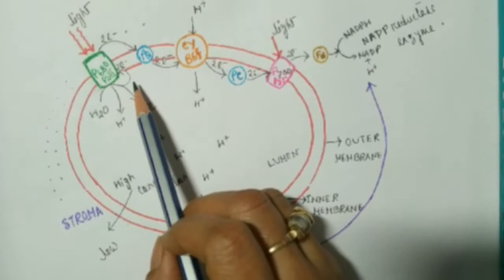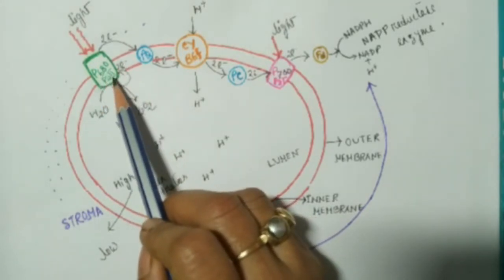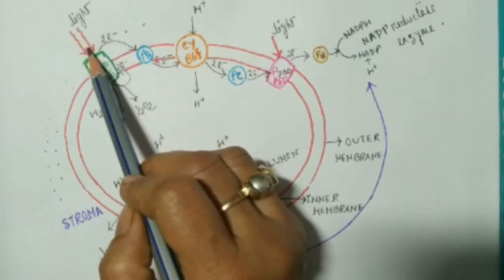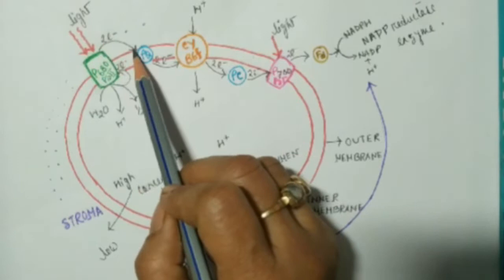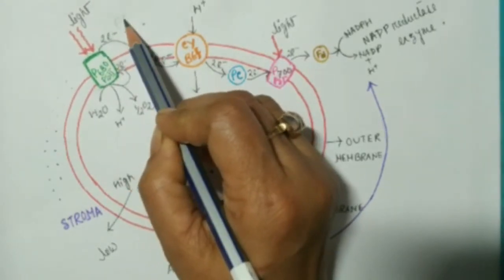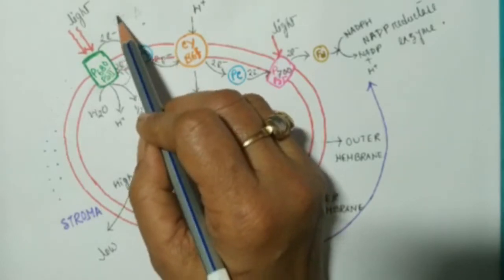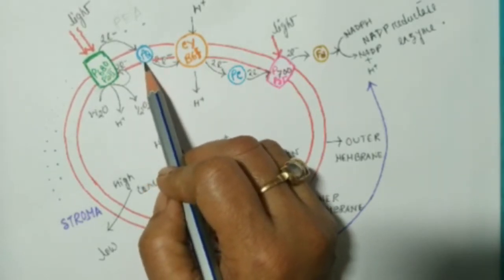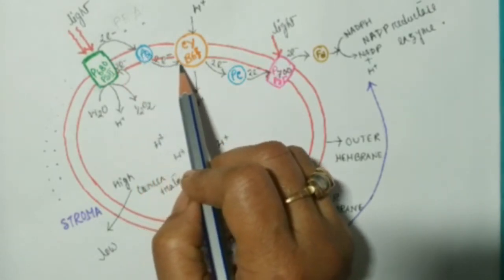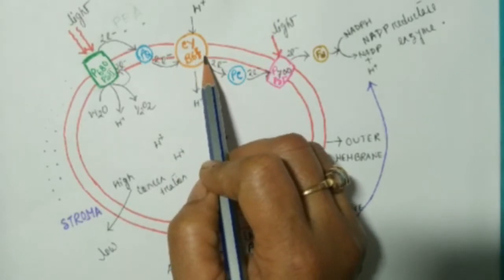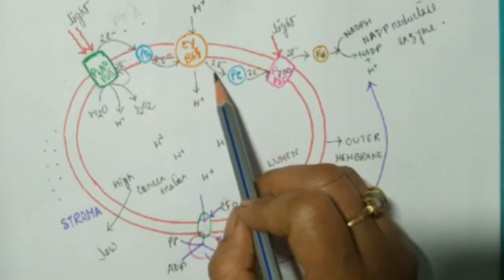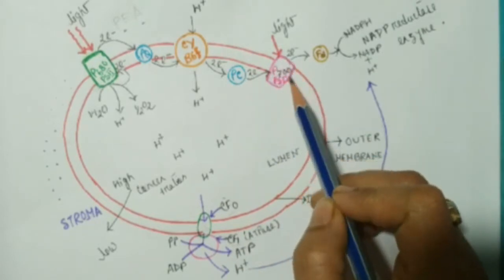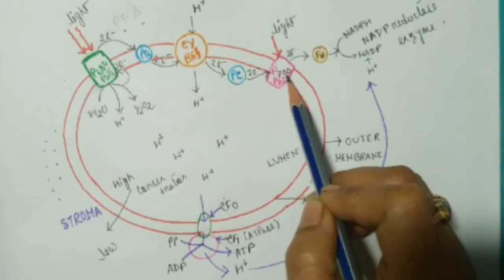In non-cyclic photophosphorylation, when the reaction center P680, meaning chlorophyll of photosystem II, absorbs light energy, it becomes excited and releases a pair of electrons accepted by the primary electron acceptor. From there, energy passes to plastoquinone (PQ), then to the cytochrome complex CYB6F, then to plastocyanin (PC), and finally the electron goes to photosystem I, where the reaction center is P700.